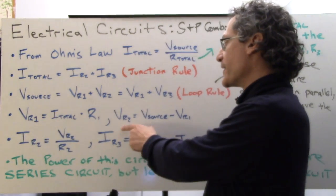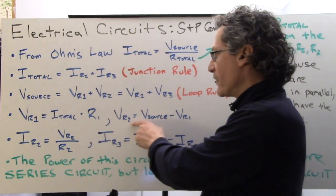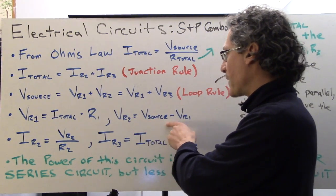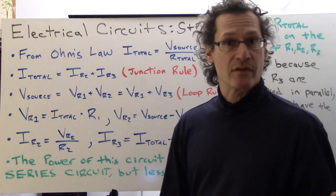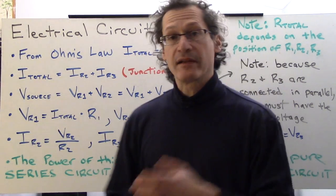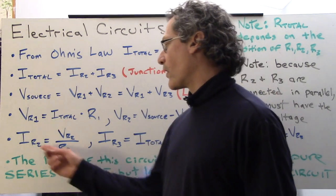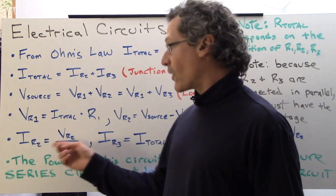So therefore, we can find V R2 from the loop rule, but I can solve for V R2 knowing what V source is. V source minus V R1 gives me V R2, and therefore V R3 because they're the same. I can find the current flowing through R2, IR2 through Ohm's law again.